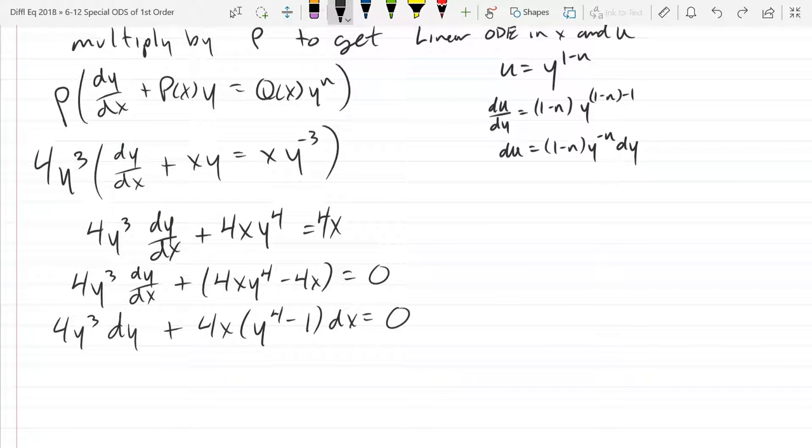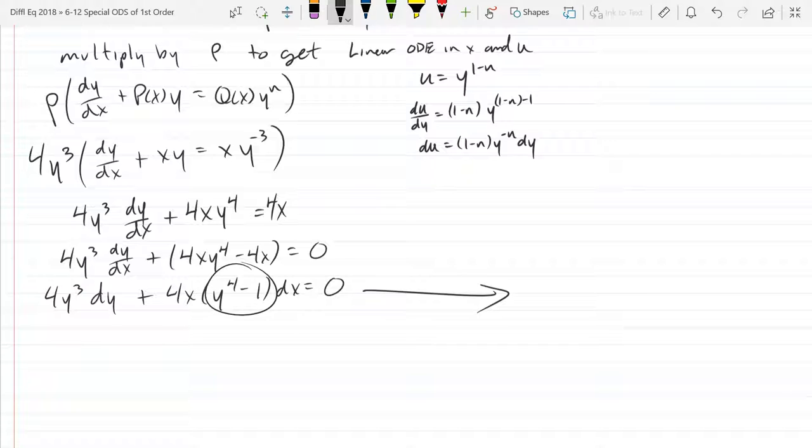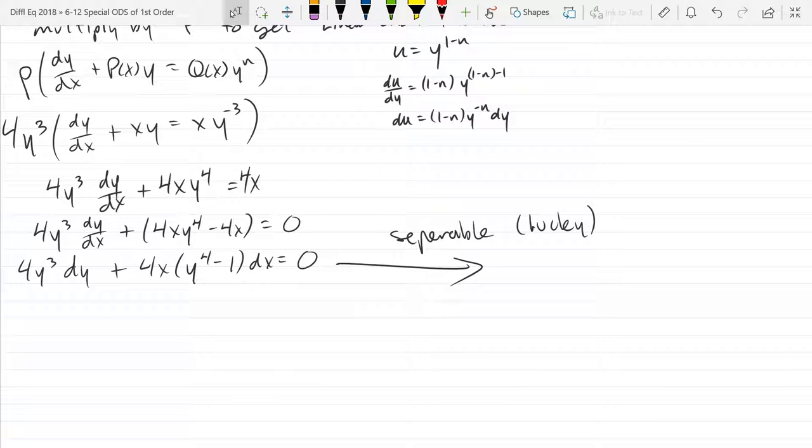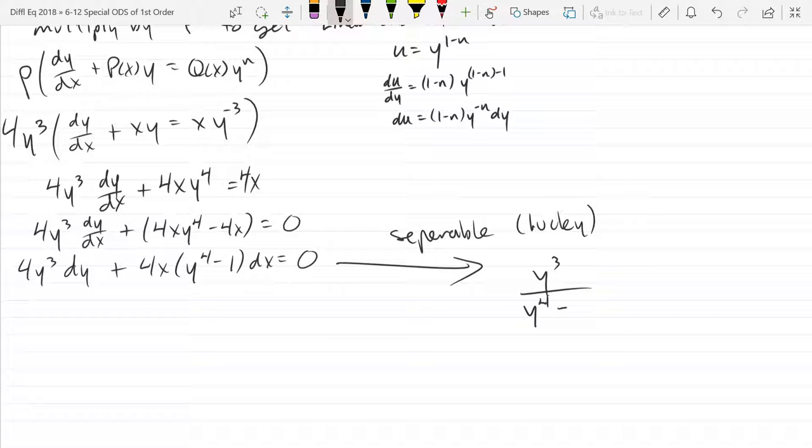So I'm just going to do the arithmetic first and then I'll multiply by dx on the next step. Of course, I can factor here. 4x(y to the fourth minus 1) multiply by dx. This appears to be separable.